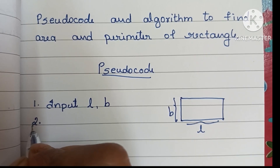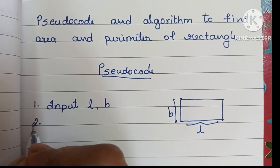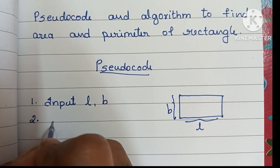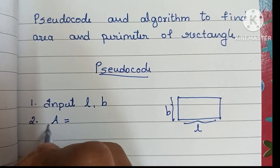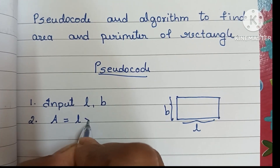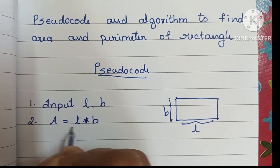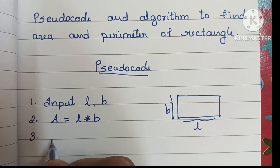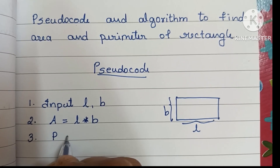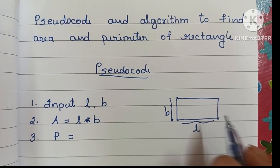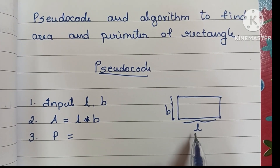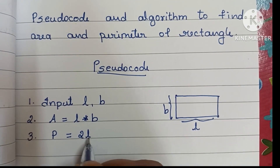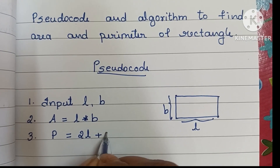Next we have to apply the formula to find area and perimeter of a rectangle. The formula for area is A = L × B, that is length into breadth. For perimeter of a rectangle, the formula is P = 2L + 2B.